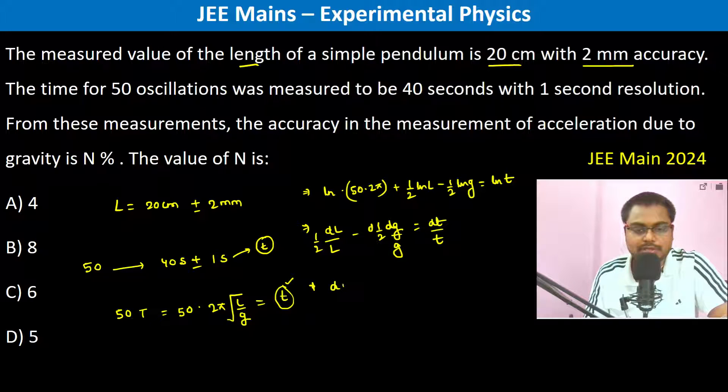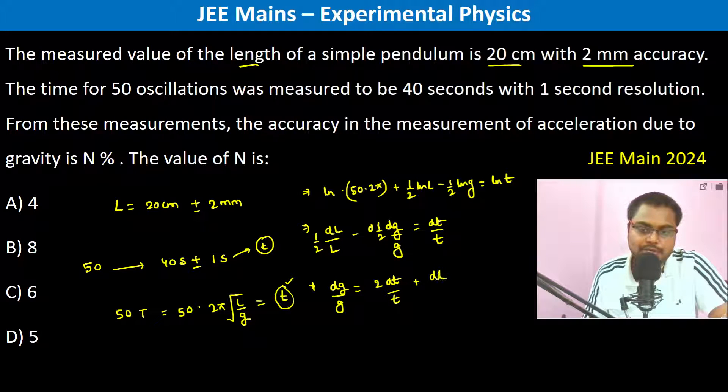Therefore d g by g is equal to 2 into d t by t plus d l by l. Now we are calculating the percentage for the gravity, so the error should always be positive and added.